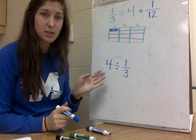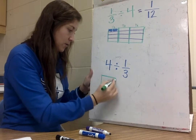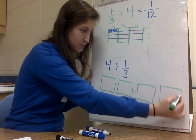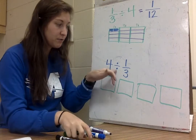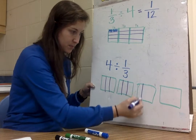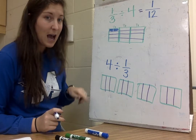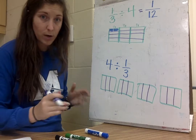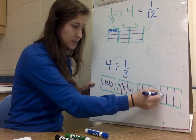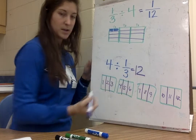Now for the second type of problem, this one's a little different. I need to represent 4 as my whole, so I draw four rectangles. Then I divide each of them into thirds. To find my answer, I count the total number of pieces: I count 12. That means the answer to 4 divided by one third is 12.